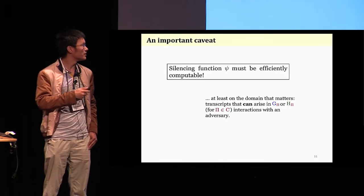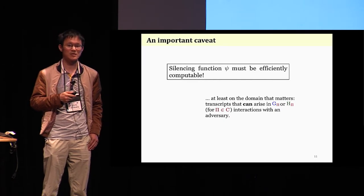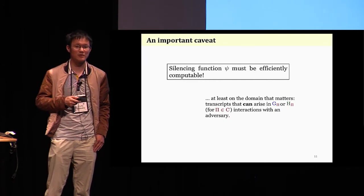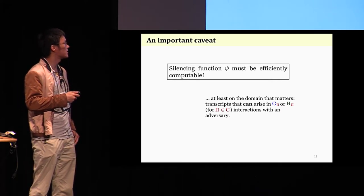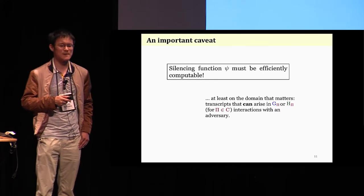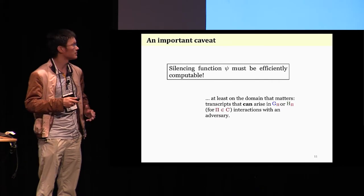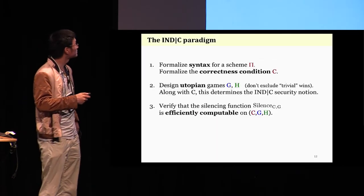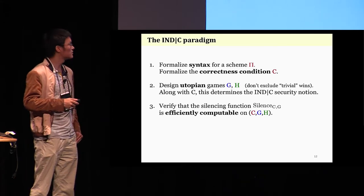But before I leave this topic, I need to mention one important caveat. That is the silencing function needs to be efficiently computable, or at least, on the domain that matters, transcripts that arise in G sub pi or H sub pi. If this does not hold, the intuition that because the adversary knows the response, so he should not ask it, simply would not hold.